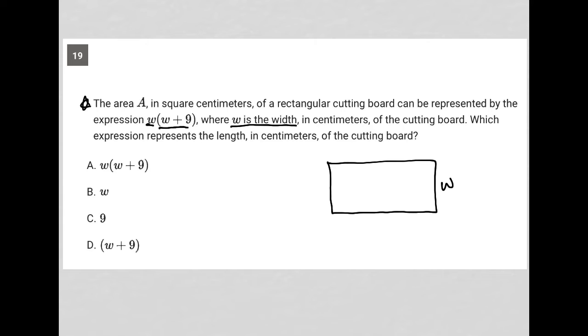Also, we know that the area is found by multiplying W times W plus 9, which means that my length must be W plus 9, because area is found by multiplying the length times the width, right?